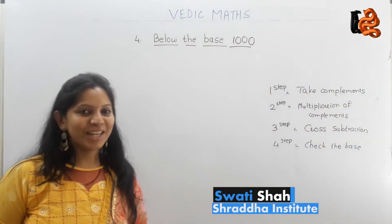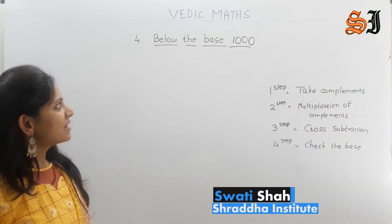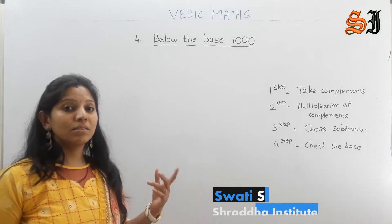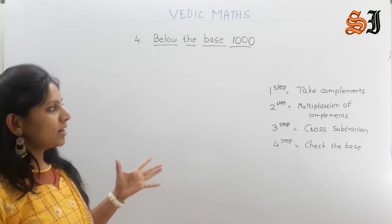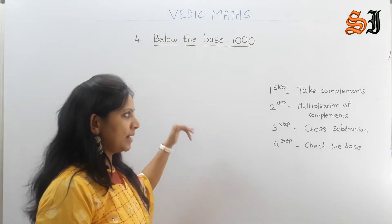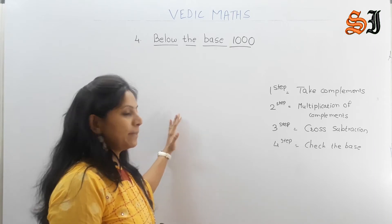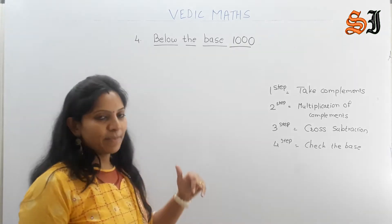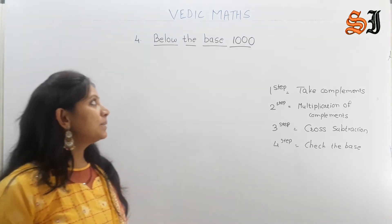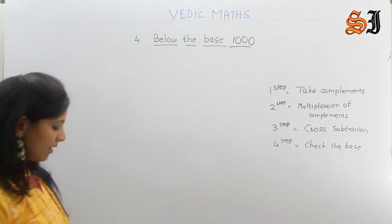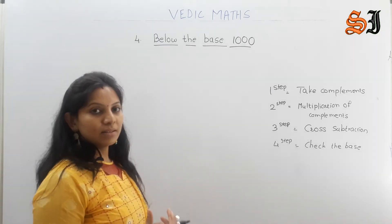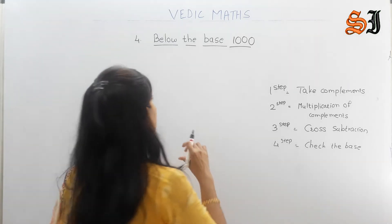Hello students, I am Swati Shah from Shaddaa Institute. Our topic is multiplication below the base 1000. We are working below the base 100. There are already steps. First step: take the complements. Second step: multiplication of complements. Third step: cross subtraction. Fourth step: check the base. The base is 1000, which is the near number we are working with.